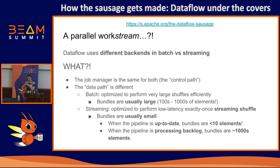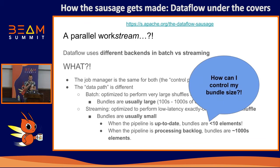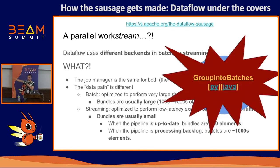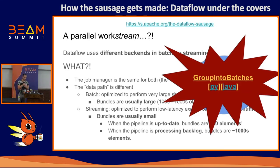You might want your bundle sizes not to vary so much. My advice is to use the GroupIntoBatches transform — it has logic to group your data into batches and works for both batch and streaming. You can specify how big you want your batches, and for streaming you can set a timeout so you don't wait too long for data to accumulate. There's also an auto-sharding feature in streaming — I'll add a blog post link to the slides.